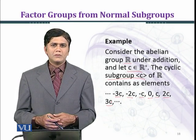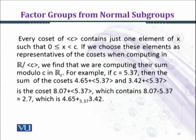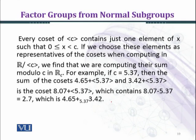Every coset of the cyclic group generated by c contains just one element x such that x greater than or equal to 0, less than c. If we choose these elements as representatives of the cosets when computing R over cyclic group generated by c, we find that we are computing their sum modulo c in R_c.